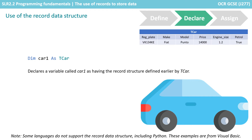Now we've got our template for our record definition, we can use it to set up variables. Here I declare a variable called car1, and I tell the computer that car1's data type will be the record structure we defined earlier by tcar. I can have as many cars as I want — car1, car2 — I can even have an array full of different cars, each of them with the template of tcar.